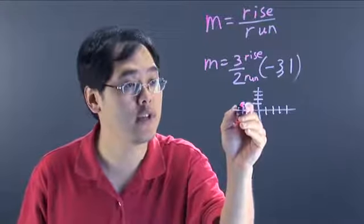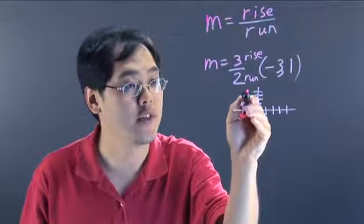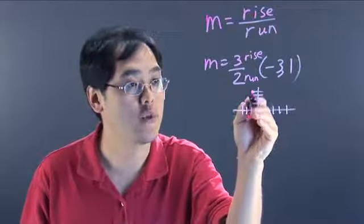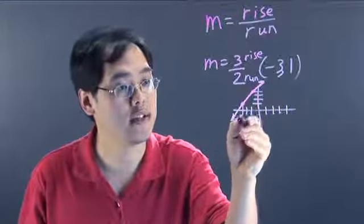So from the point that you just graphed, you're literally going to follow the directions. You're going to go up three and then you're going to go over two. And then once you have that, you're just going to graph the line like so.